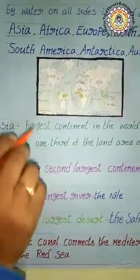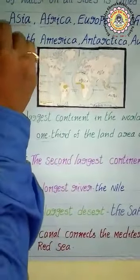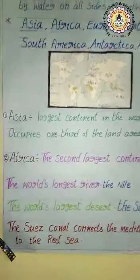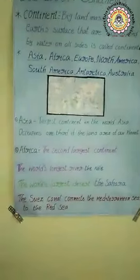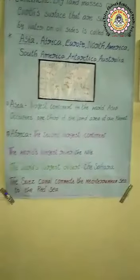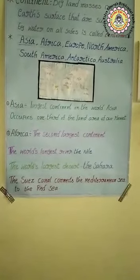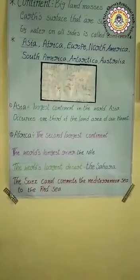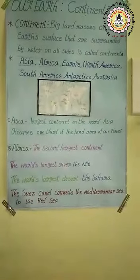Today we will discuss a minimum of two continents. First, about Asia and second about Africa. Asia is the largest continent in the world among the seven continents. Asia occupies one-third of the land area of our planet.